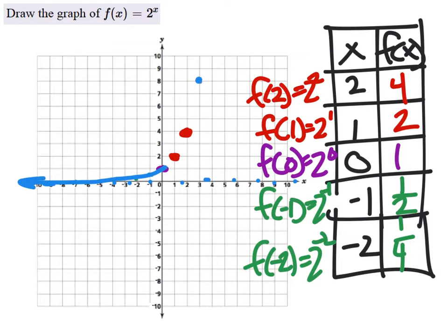3 would be 8, so it should go through that point. Maybe your line looks better than mine, I don't know, something like this.